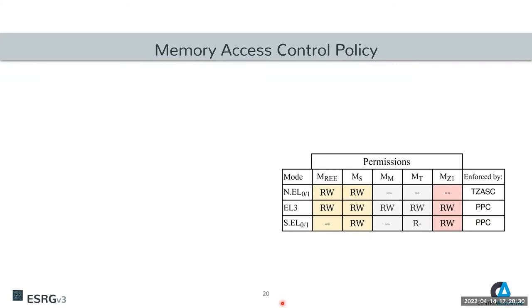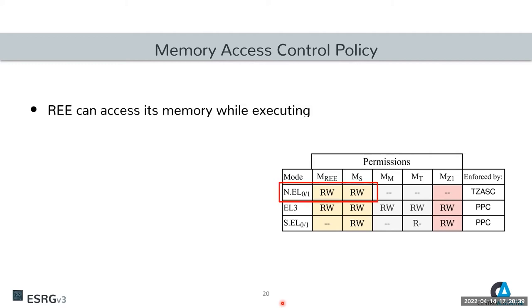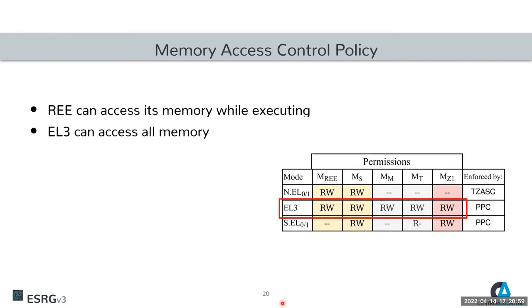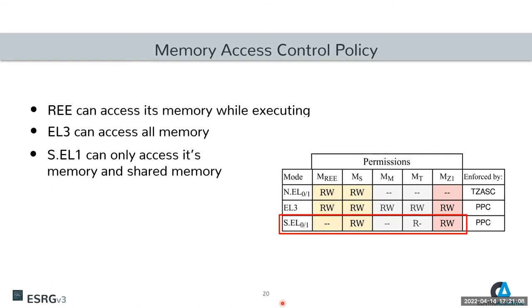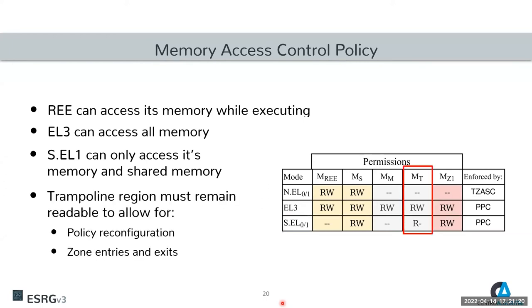The access control policy is established depending on the privilege level that is executing. The REE — normal world EL0 and EL1 — can access its memory and the shared memory, exactly as in typical TrustZone software. At EL3, the monitor can access all memory it needs since it's the most trusted component. For secure EL0 and EL1, the permissions allow access only to its own memory and the shared memory. Notably, the Trampoline is marked as read-only, which is important for performing secure policy reconfiguration.